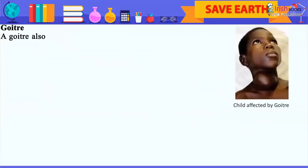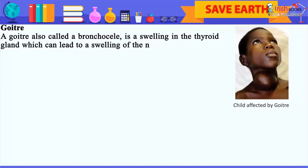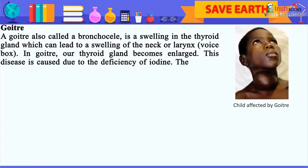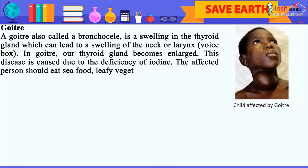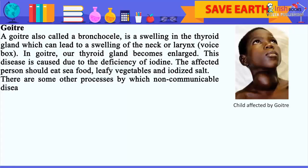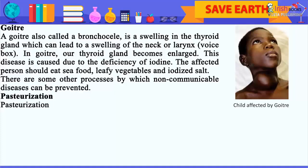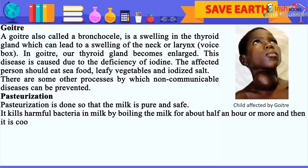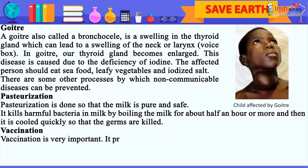Goiter: A goiter, also called a bronchocele, is a swelling in the thyroid gland which can lead to a swelling of the neck or larynx (voice box). In goiter, the thyroid gland becomes enlarged. This disease is caused due to the deficiency of iodine. The affected person should eat seafood, leafy vegetables and iodized salt. There are some other processes by which non-communicable diseases can be prevented. Pasteurization is done so that milk is pure and safe. It kills harmful bacteria in milk by boiling the milk for about half an hour or more, and then it is cooled quickly so that the germs are killed.